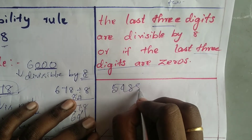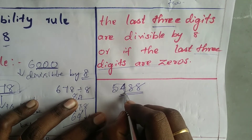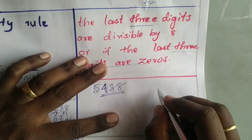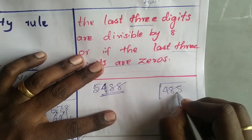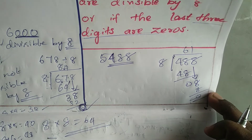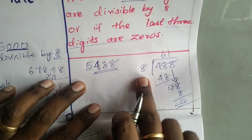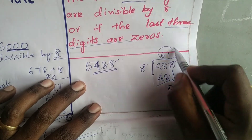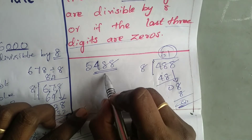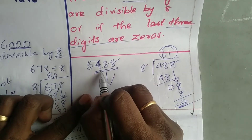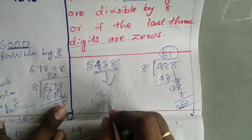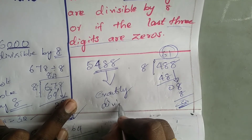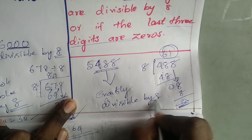Next example: 5,488. Look at the last 3 digits: 488. Divide 488 by 8. The result gives quotient 61 and remainder 0. So we can say 5,488 is exactly divisible by 8.